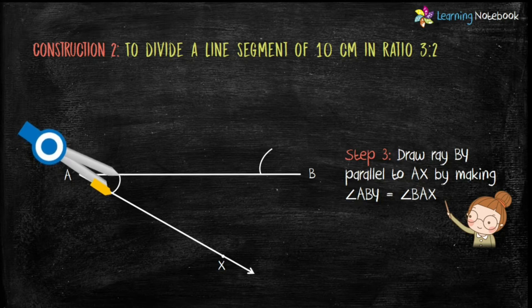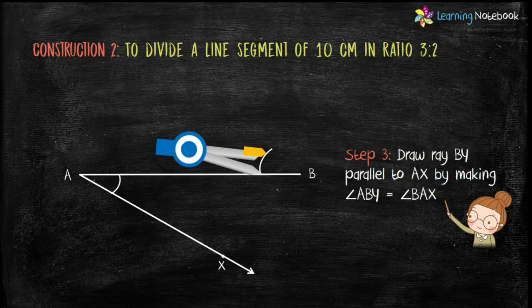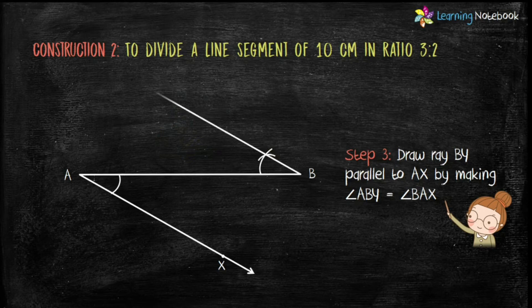Keeping the same radius, place the compass at the end of arc drawn at B. Cut this arc. Now, through this point, draw a line to join point B. So, we have got a line BY parallel to AX.